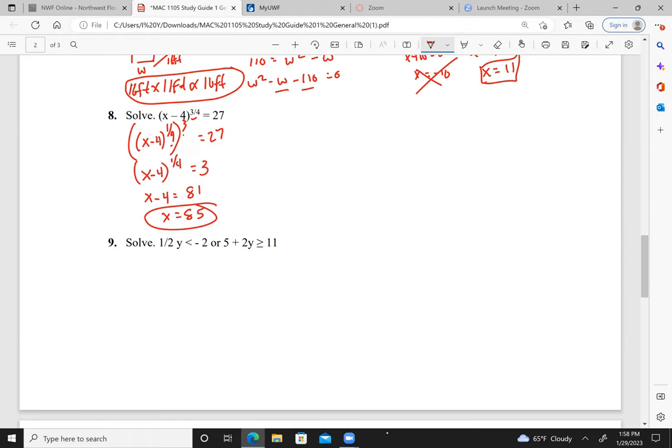Here we have an or statement. An or statement means the union of the two solutions. And it also doesn't tell us what form to put the solution in. So let's solve this. Looking at the first one here, all I have to do is multiply by 2. Y is less than negative 4. Or here I need to subtract 5. So I have 2Y greater than or equal to 6, divided by 2. Y is greater than or equal to 3.